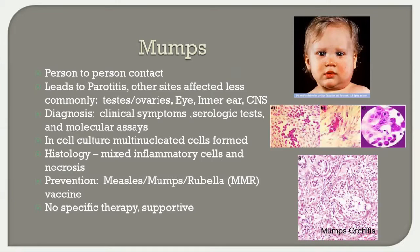Mumps is spread by person-to-person contact and typically causes parotitis on one or both sides, but other sites can be infected including testes, ovaries, eye, inner ear, and CNS. Diagnosis is by clinical symptoms, serologic tests, and molecular assays. In cell culture, multi-nucleated cells form, and histology shows mixed inflammatory cells and necrosis. The MMR vaccine is the best prevention; only supportive therapy is available.